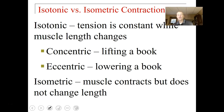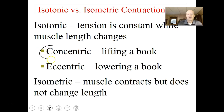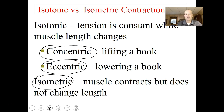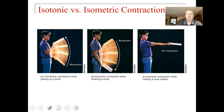There are different kinds of tensions you can create. Isotonic is a tension that is constant while the muscle length changes. A concentric contraction is like lifting a book — constant tension but the muscle length is changing. Eccentric is where you're lowering a book — the muscle tension is the same but the muscle length is changing. Isometric is where the muscle contracts but does not change in length, like just squeezing the muscle without movement.